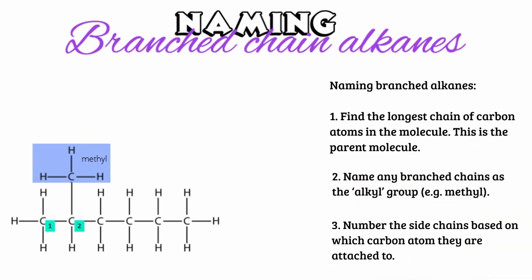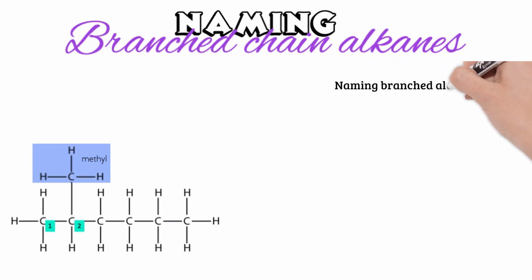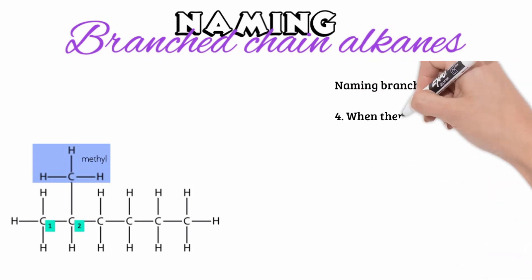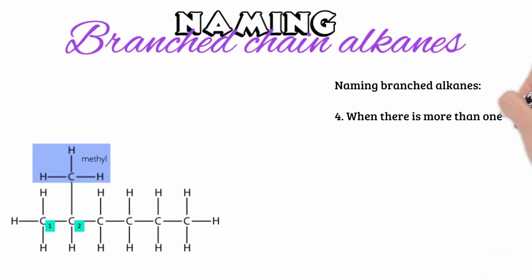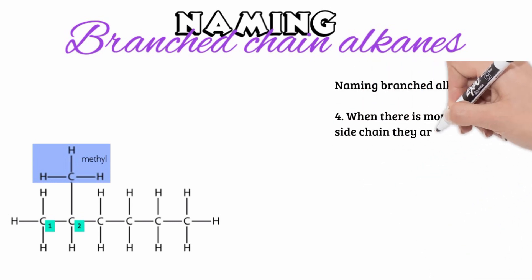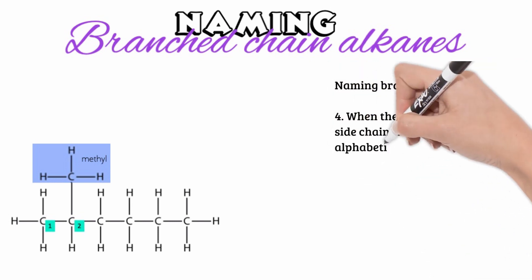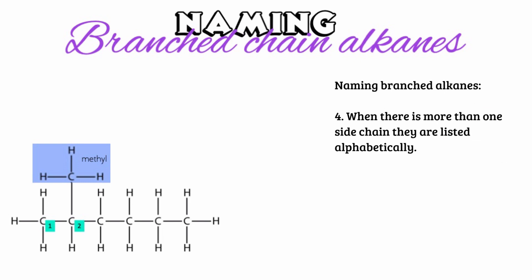Step three: number the side chains from the end of the parent chain which will give them the lowest number. Step four: when there is more than one side chain, list them alphabetically — but note that any prefixes like di-, tri-, tetra- don't count in the alphabetizing.